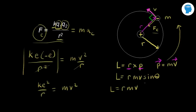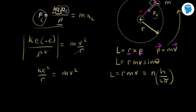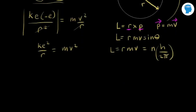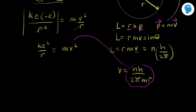Niels Bohr thought that angular momentum should be quantized, so he set it equal to an integer n — like 1, 2, or 3 — times Planck's constant h, divided by 2π. This is Bohr's quantization condition. Solving for velocity from this equation gives v = nh divided by 2πmr.